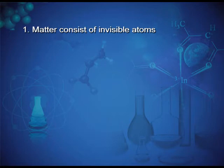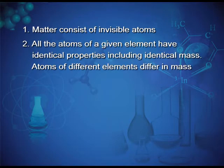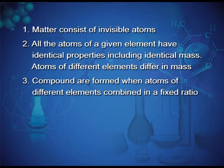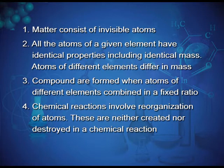Point one: matter consists of indivisible atoms. Point two: all atoms of a given element have identical properties including identical mass; atoms of different elements differ in mass. Point three: compounds are formed when atoms of different elements combine in a fixed ratio. Chemical reactions involve reorganization of atoms — they are neither created nor destroyed.